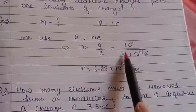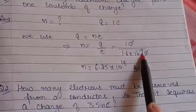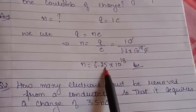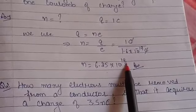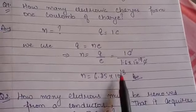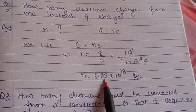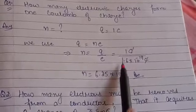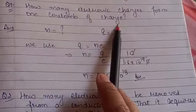So when we divide 1.6 into 10 raise to power minus 19 with 1, we will get the answer 6.25 into 10 raise to power 18. So the answer is 6.25 into 10 raise to power 18 electron charges form 1 coulomb of charge.